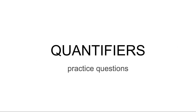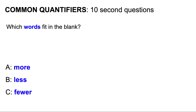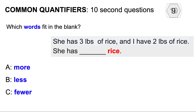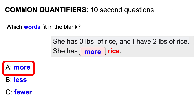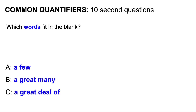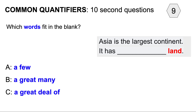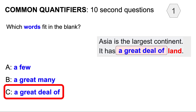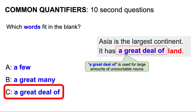Now let's do some 10-second practice questions. Please choose the word that best fits in the blank. She has three pounds of rice, and I have two pounds of rice — she has more rice. More is a comparative quantifier. Rice is an uncountable noun. Next: Asia is the largest continent — it has a great deal of land. A great deal of is used for large amounts of uncountable nouns. Land is an uncountable noun.